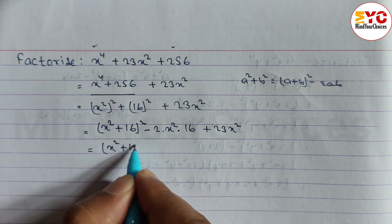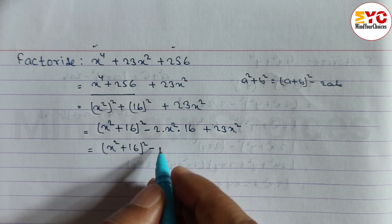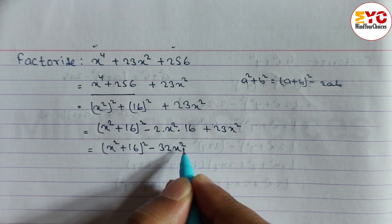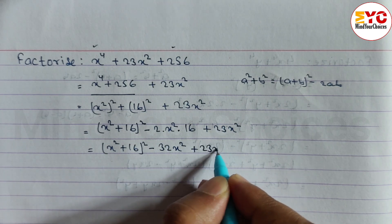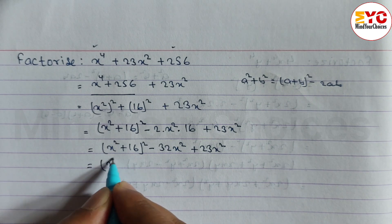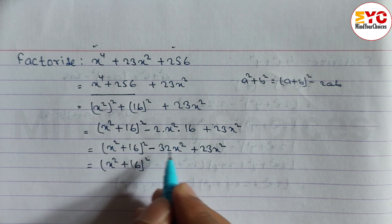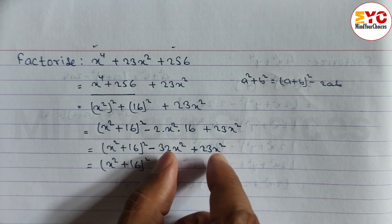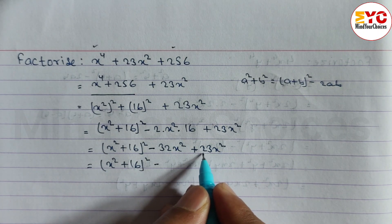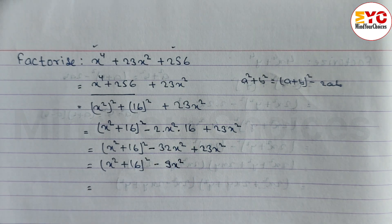We can write (x² + 16)² − 32x² + 23x². Now we subtract these two like terms: −32x² + 23x² = −9x². So we get (x² + 16)² − 9x².